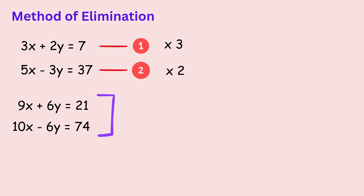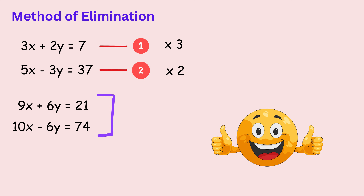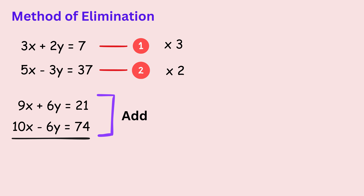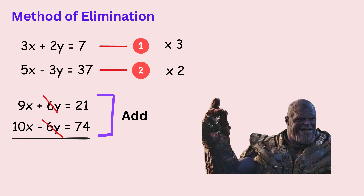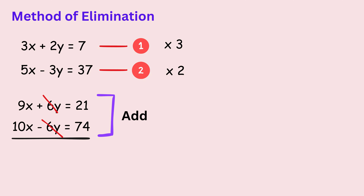At this point, both equations contain 6y and minus 6y. This is exactly what we wanted. Now we add the two equations together. When we do this, 6y and minus 6y cancel each other out and become zero. That means y disappears completely. We are left only with terms involving x.